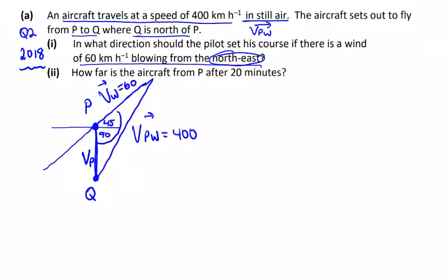If I take my triangle again, I can put the velocity of the plane as V. If the wind is 60 and the plane relative to the wind is 400, from having this much information, like 2019, I can calculate whatever I need.